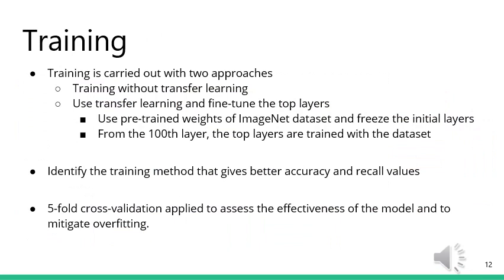We carried out training with two approaches: with and without transfer learning. In transfer learning, we used pre-trained ImageNet weights and frozen initial layers; layers starting from the 100th layer were trained with our dataset. From these two methods, we chose the training method that gave the best accuracy. In addition, we conducted 5-fold cross validation to assess the effectiveness of the model and to mitigate overfitting.